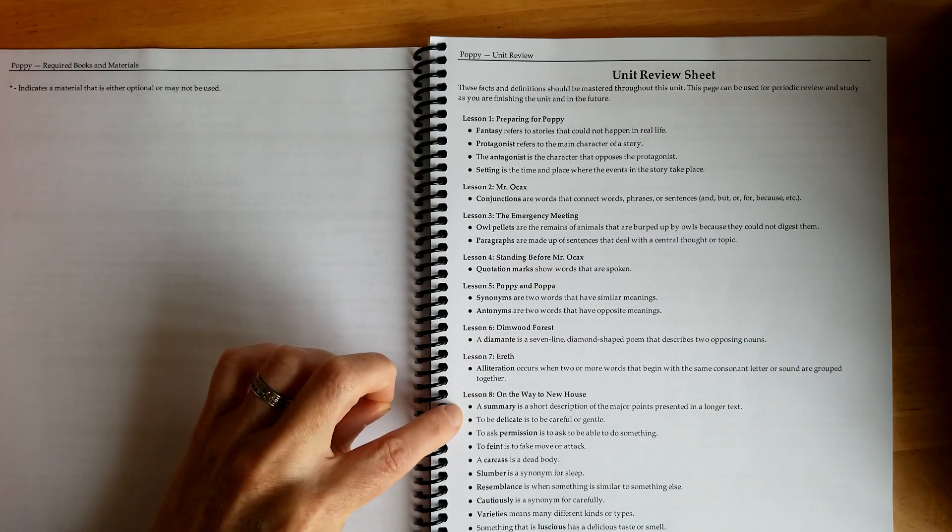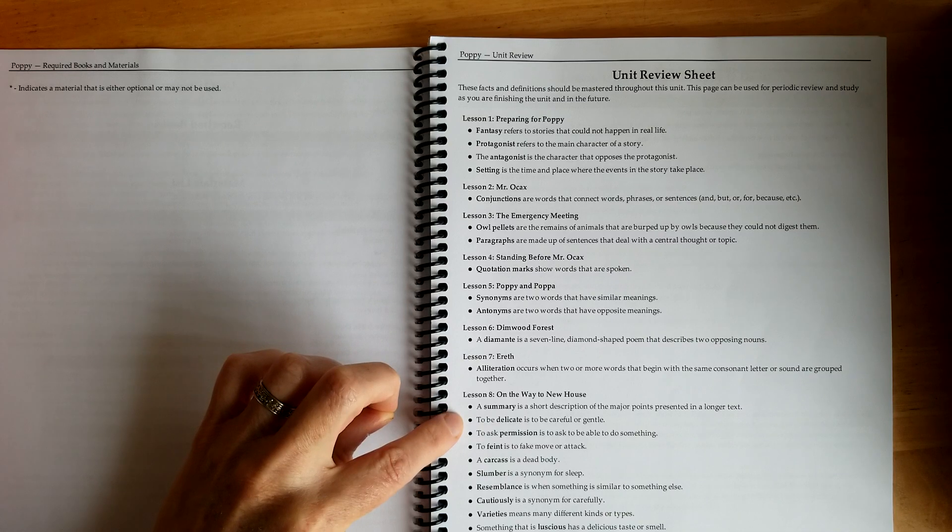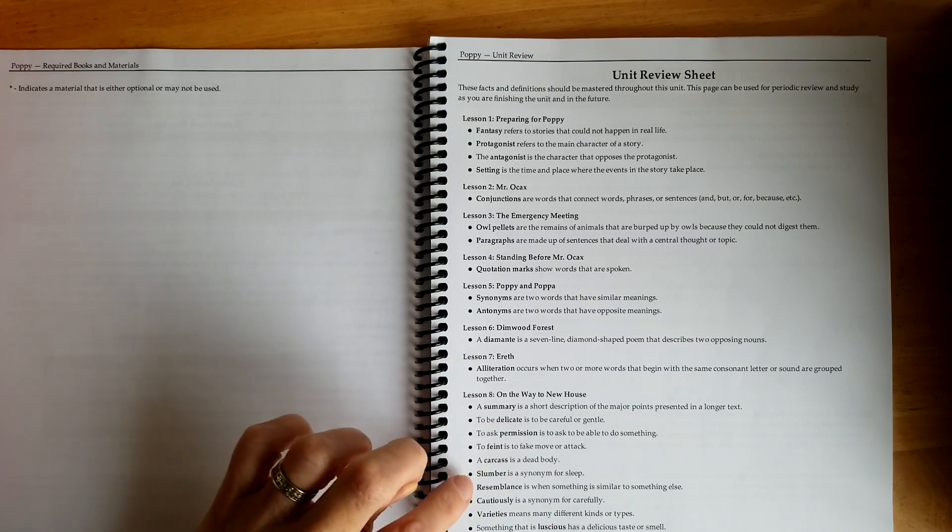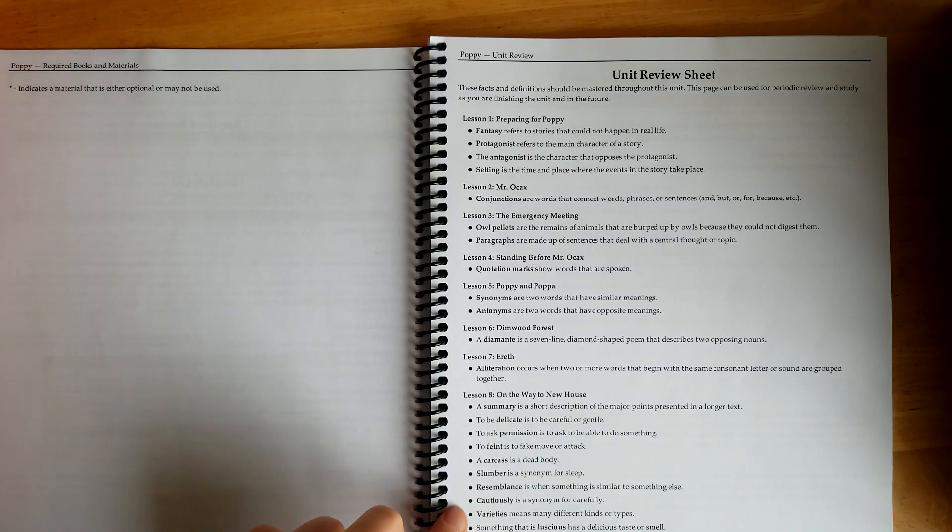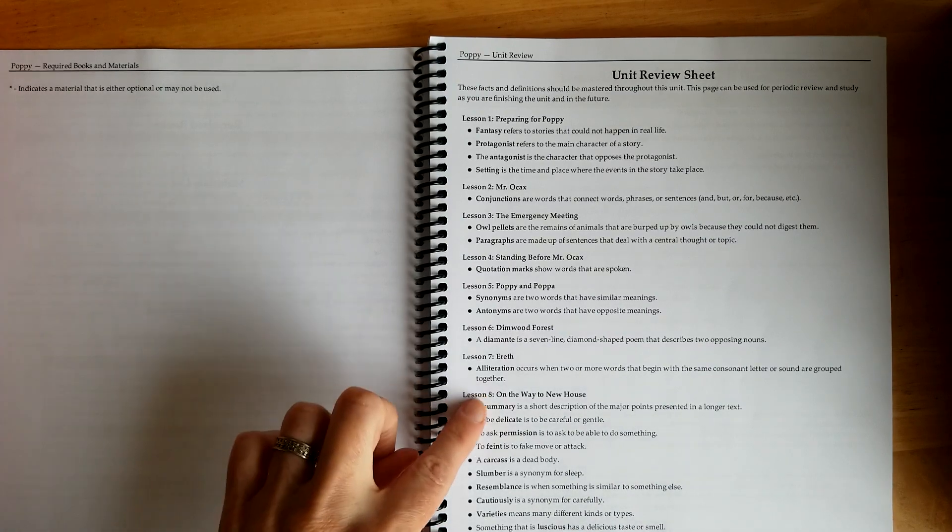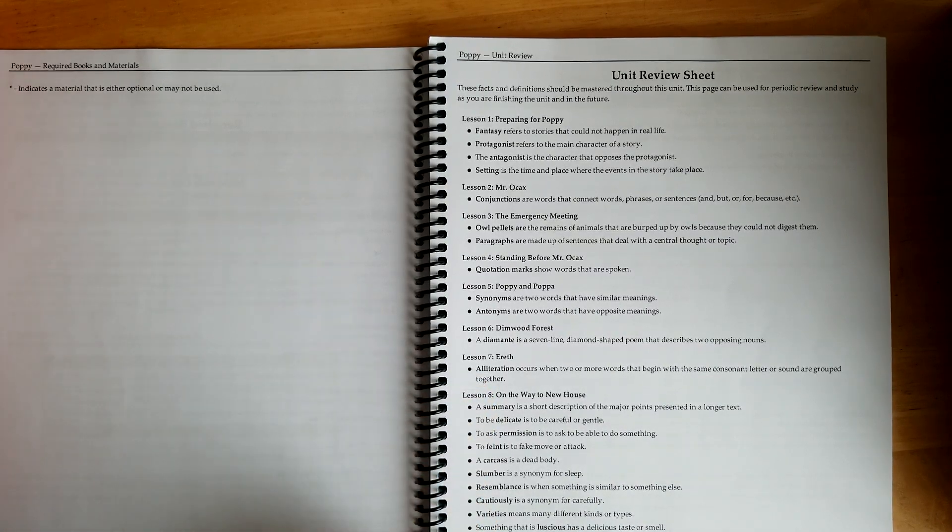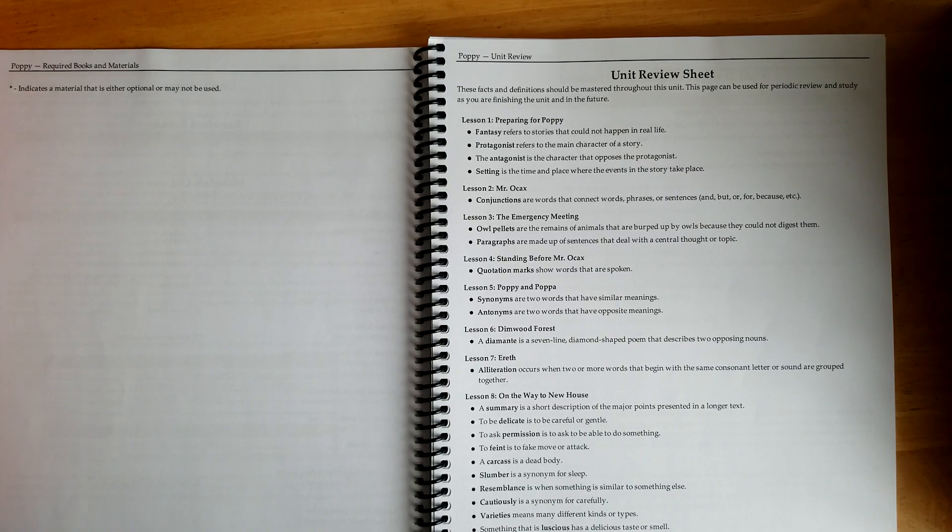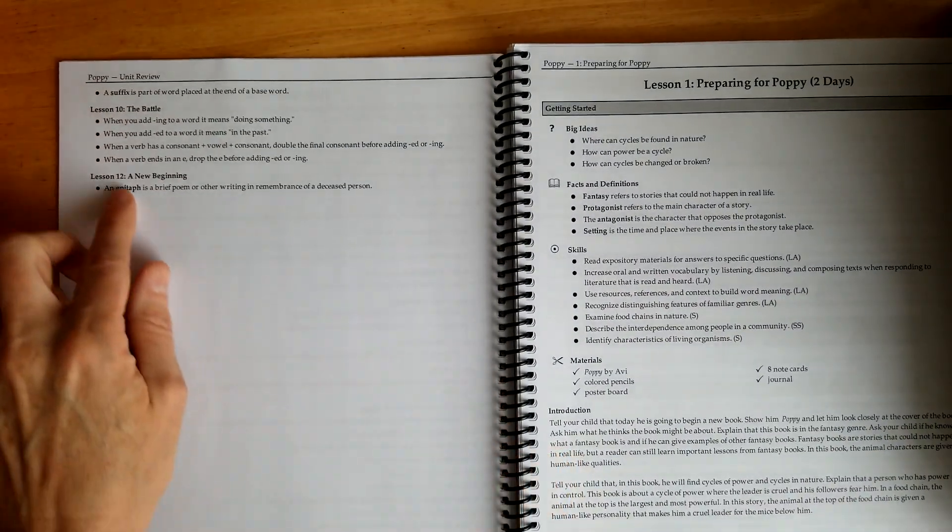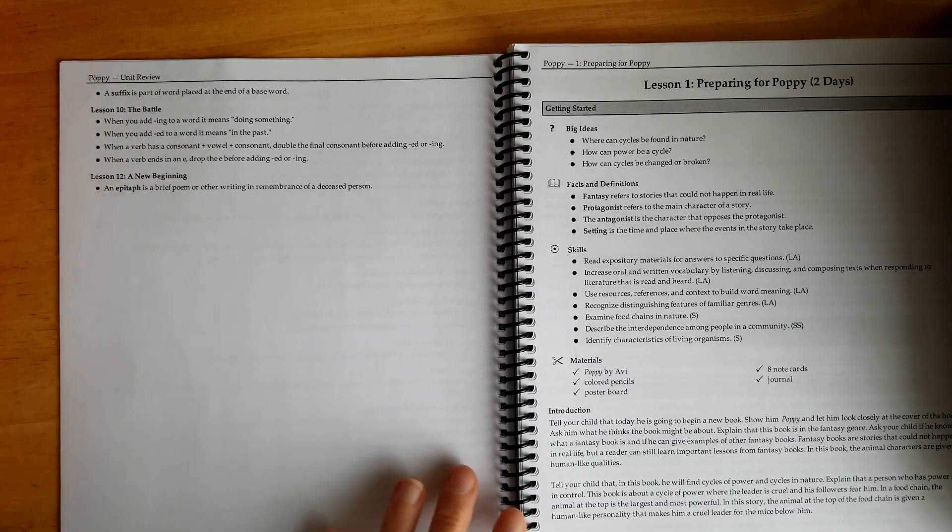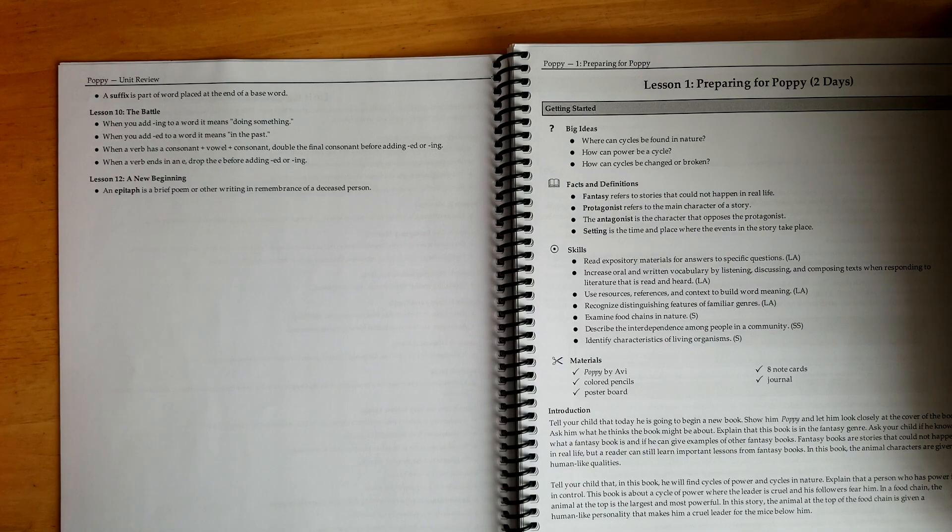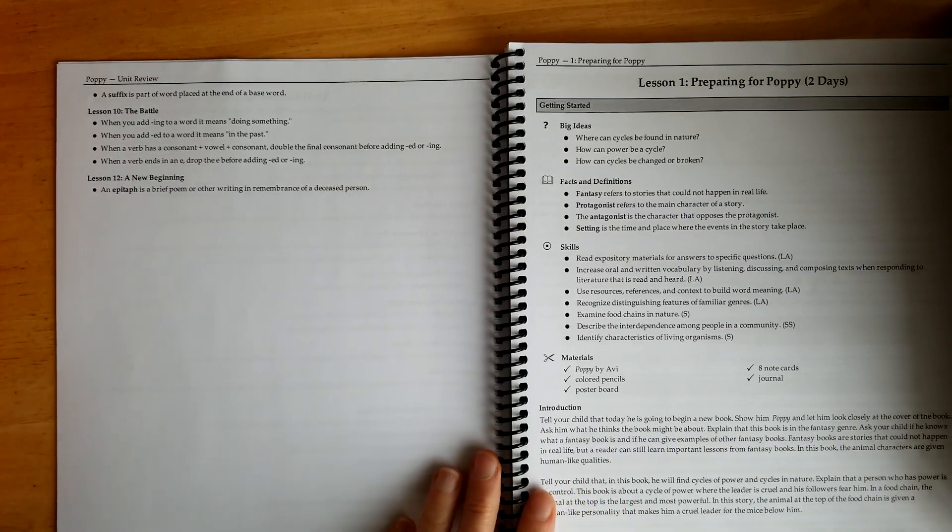Alliteration, summary, the words delicate, permission, faint, carcass, slumber, resemblance, cautiously, varieties, luscious, astonished, and attempt. These are all words that you can go over with your child. It also covers prefix and suffix, and adding ed and ing to words, and an epitaph.